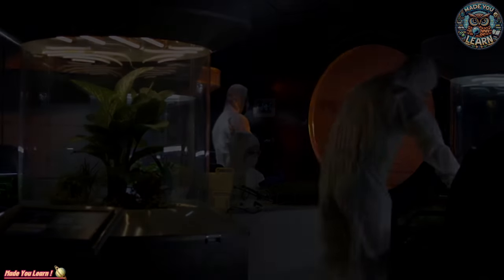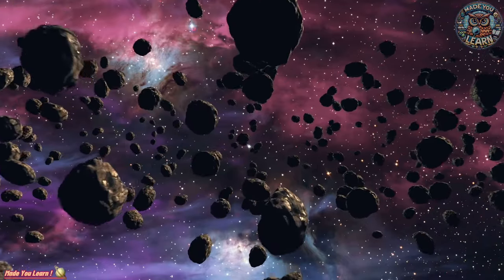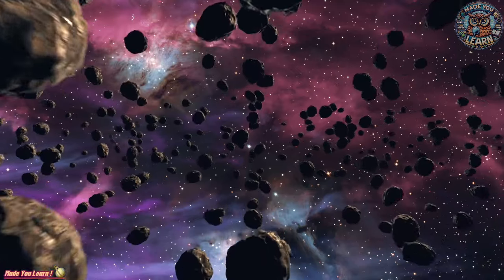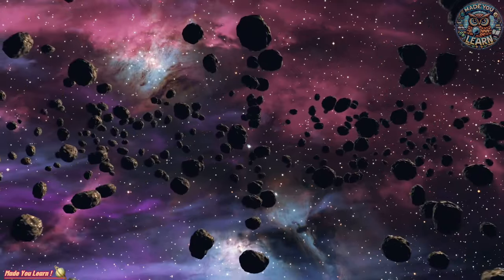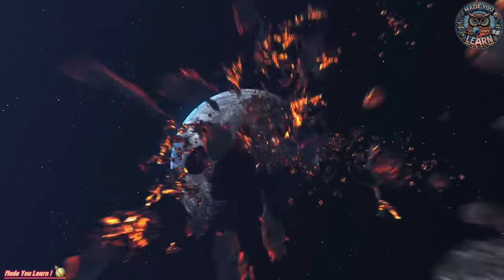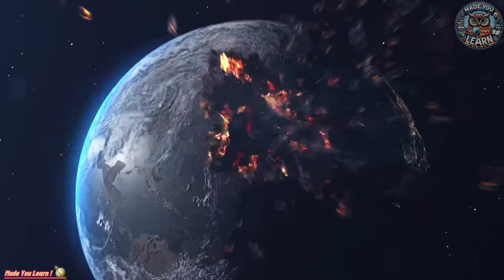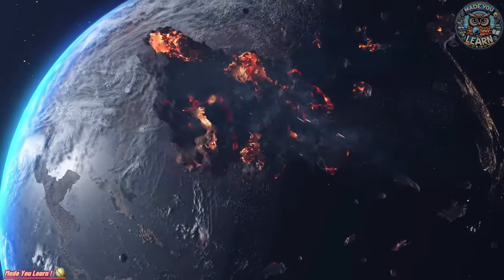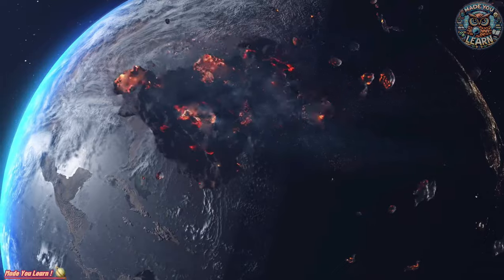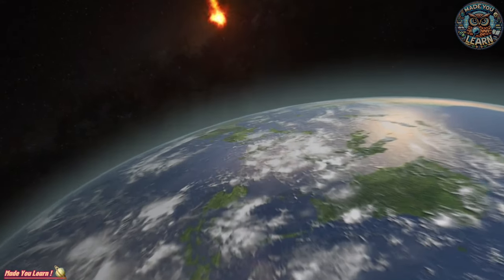Beyond the rocky inner planets lies the asteroid belt, a region populated with rocky remnants from the solar system's formation. This celestial debris field contains millions of objects, ranging from small rocks to dwarf planet Ceres, offering clues to our cosmic origins.